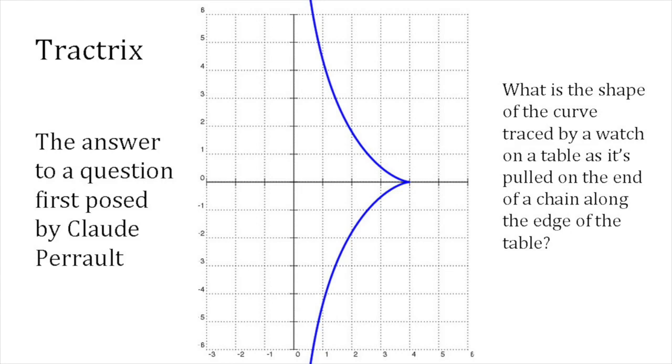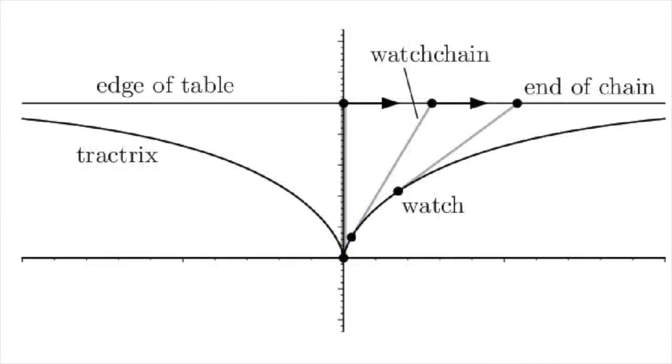In 1676, at about the time the German mathematician and polymath Gottfried Leibniz was doing ground-breaking work on the calculus, Perrault placed his pocket watch on the middle of a table, pulled the end of its chain along the edge of the table and asked, what is the shape of the curve traced by the watch?